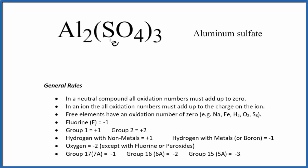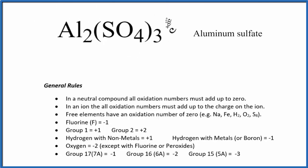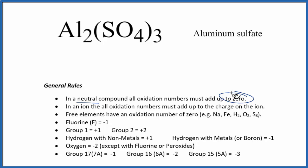In this video, we'll find the oxidation numbers for each element in Al₂(SO₄)₃ — that's aluminum sulfate. Aluminum sulfate is a neutral molecule; it doesn't have a plus or minus charge like we'd see with ions. Because it's a neutral compound, all the oxidation numbers are going to add up to zero. We'll use that to help find the oxidation numbers.